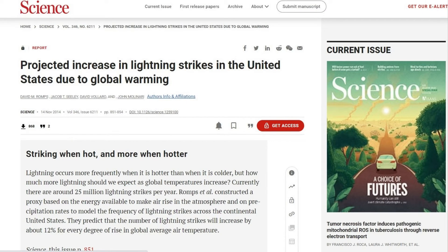Well, how about lightning? Even that's heat-related. From Science 2014, lightning occurs more frequently when it is hotter than when it is colder. And they're citing a study that predicts the number of lightning strikes will increase by about 12% for every degree of rise in global average temperature.